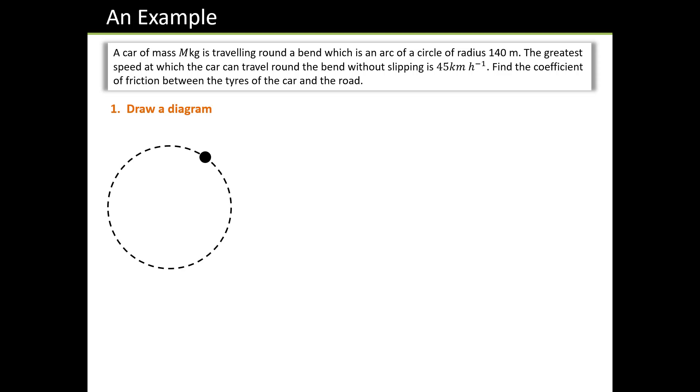So the first thing we do is draw a diagram. And there is my car, handily modeled as a point, traveling around a circle. I better put on some dimensions. The radius is 140 meters. The car is traveling at 45 kilometers an hour. Before I start working anything else out, I need to turn everything into standard units. 45 kilometers an hour is not in meters per second. We times by 1000 to get meters per hour then divide by 3600 to get meters per second. This car is traveling at 12.5 meters per second.